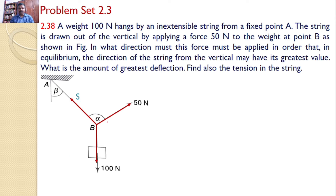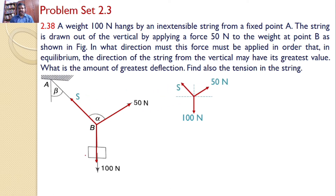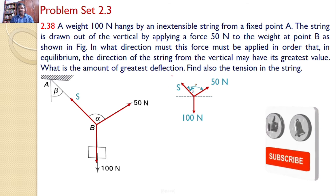Now let us transfer all three forces onto a separate xy plane for easy analysis. I am transferring the 100 newton force, the 50 newton force, and the tension along the string, that is S. Next we need to identify the angles between the various forces. Clearly, the string S makes an angle beta with the vertical, so this angle is beta. The angle between the tension in the string and the 50 newton force is alpha.